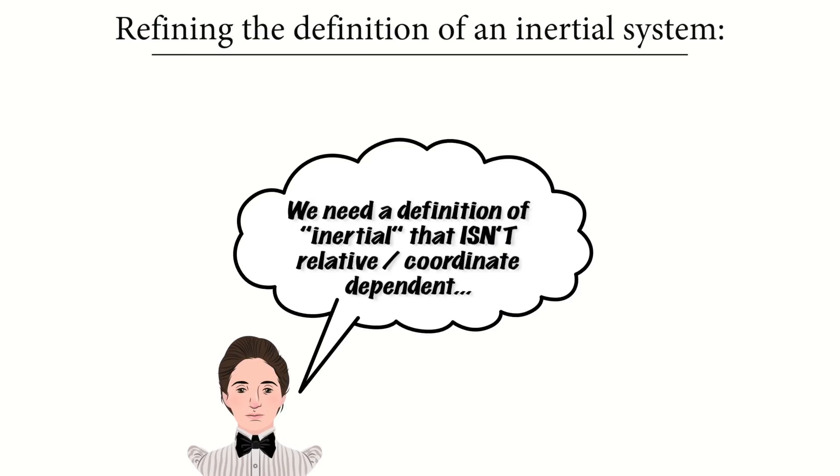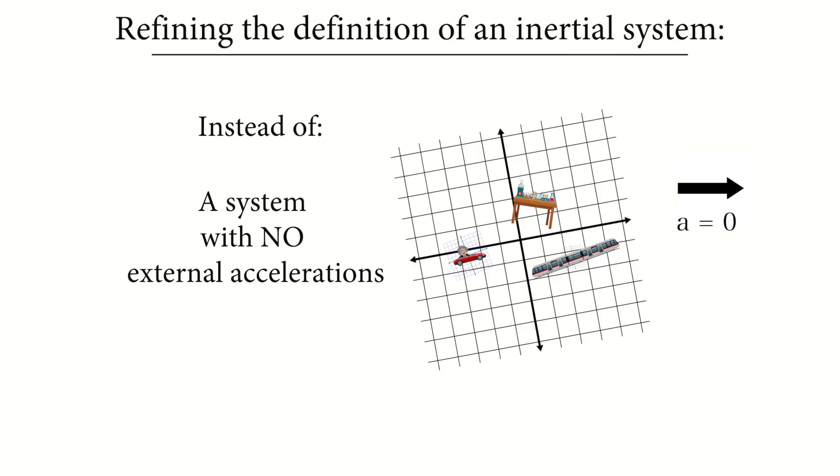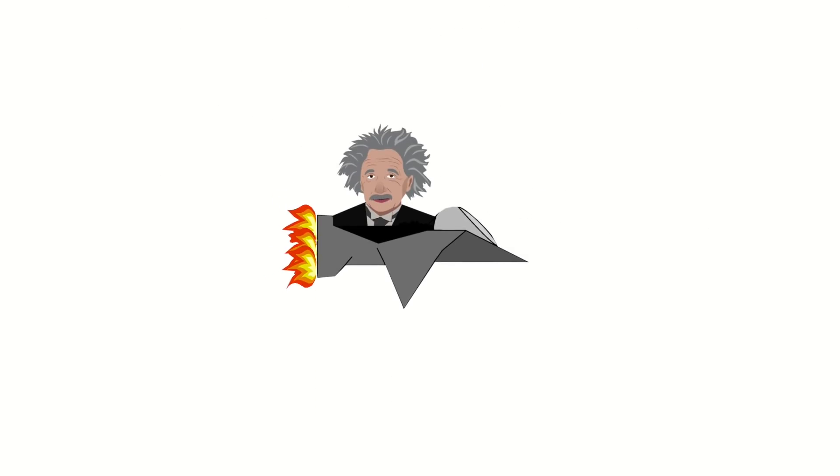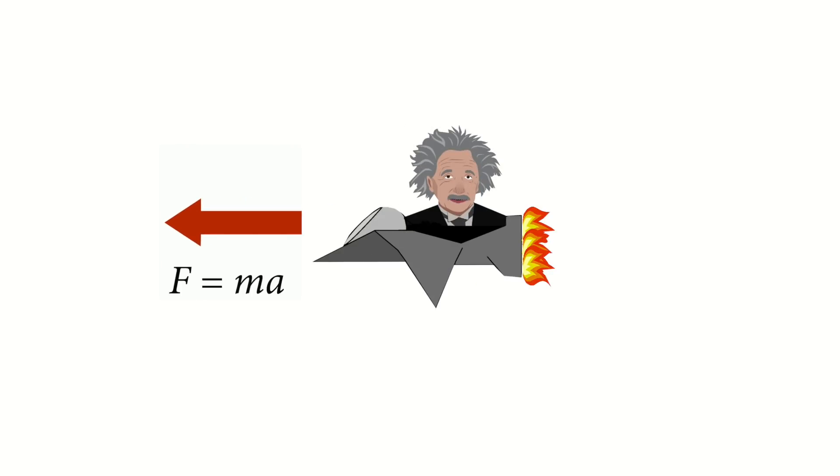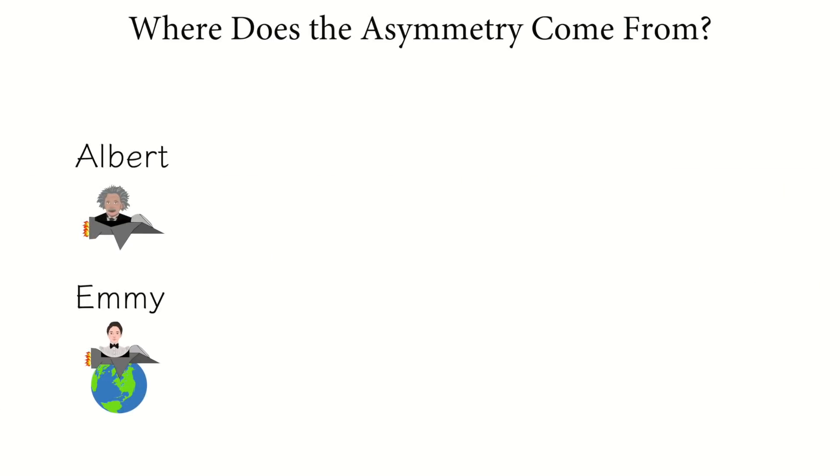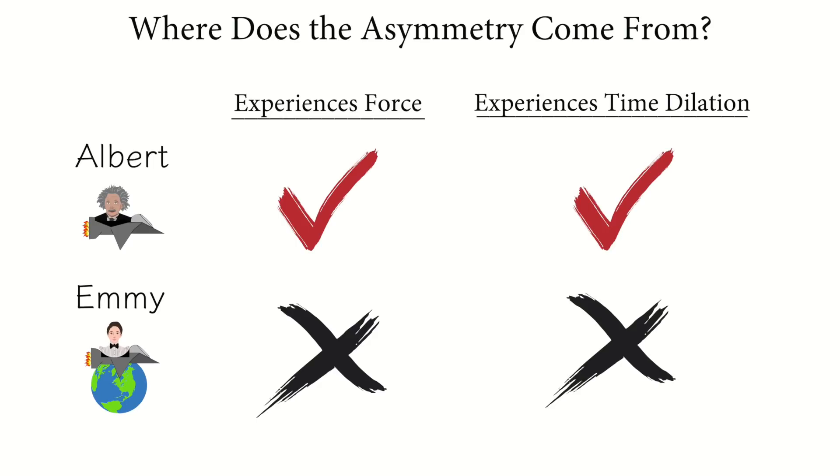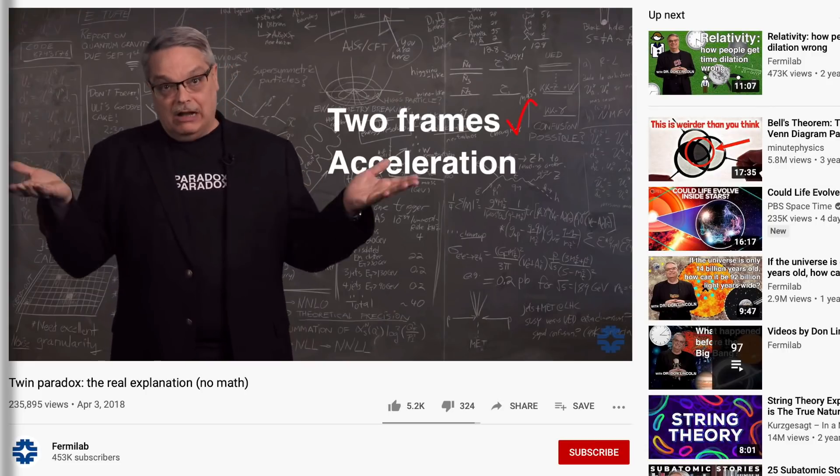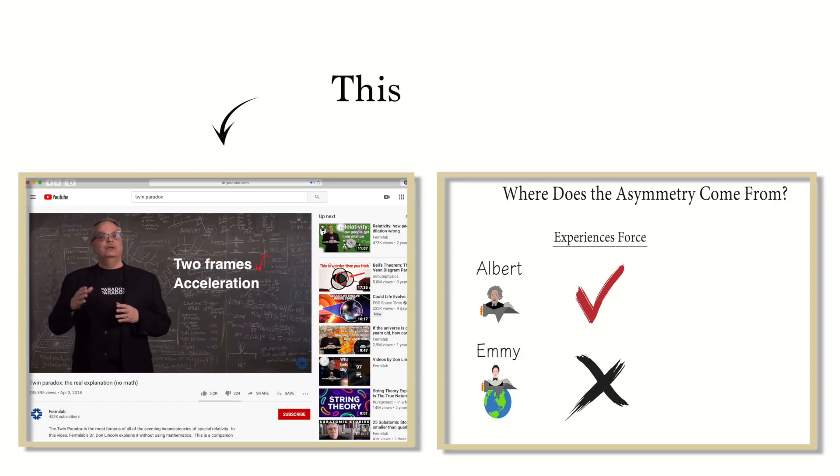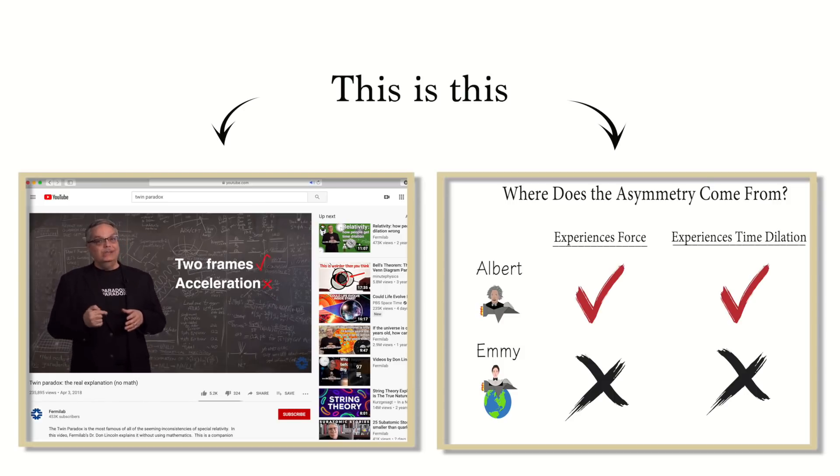But fortunately, proponents of the inertial frames resolution are smarter than that. Their definition of an inertial system doesn't rest on the notion of absence of external acceleration, but rather on the subtler notion of the absence of external force. Twin B, who fires his rockets, is said to experience a force at the turnaround point, and hence occupies a non-inertial frame during this time, while twin A on Earth, who experiences no forces, remains in an inertial frame. This difference in experiencing force versus not experiencing force produces the necessary asymmetry required to resolve the paradox. This is what the switching frames resolution is really all about. The whole one frame, two frame formulation is just a complicated way of saying that one twin experiences force while the other doesn't.